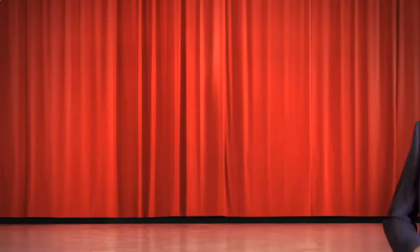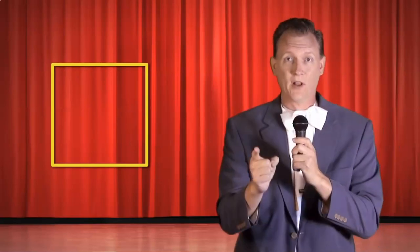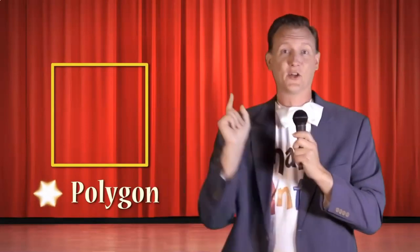Our first shape is a square. Is a square a polygon? Yes! A square has four sides and four vertices, and it's a closed 2D shape, so it is a polygon.